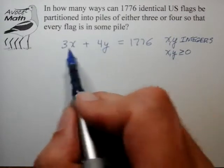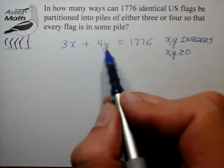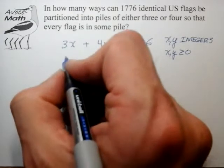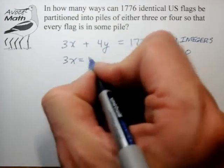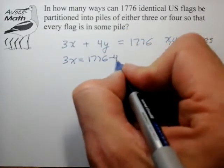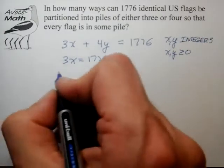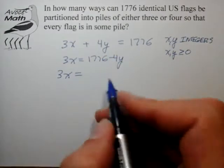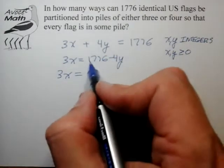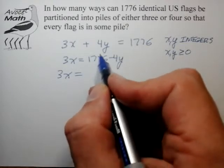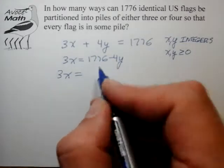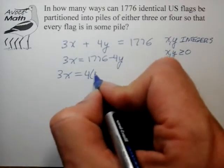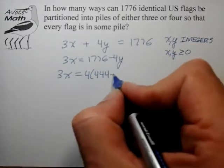We have a choice as to which term we bring over to the right side. I usually try to bring the larger term over. 3x equals 1776 minus 4y. We have to bring out the factor of 4. 4 into 1776: 4 into 17 is 4, 16, another 4. So that's 4 times 444 minus y.